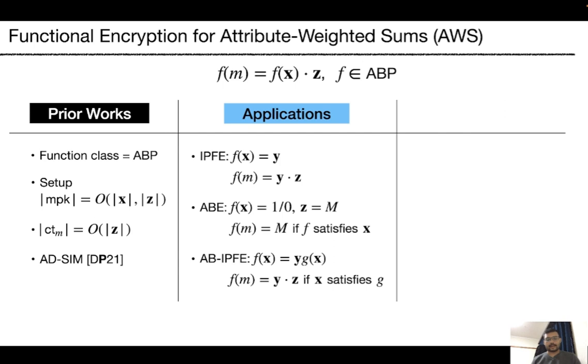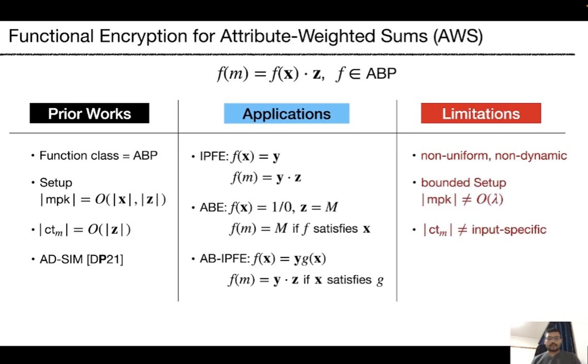It only considers non-uniform or non-dynamic model. The setup is bounded. The ciphertext size is not input specific, and it captures only bounded FE schemes. Let's see how to remove all the limitations one by one.